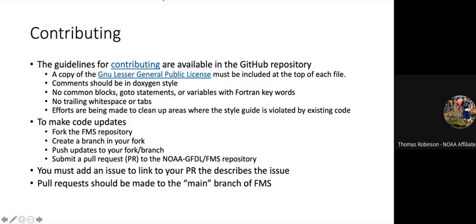There's a contribution guideline worth reading. Comments should be in Doxygen style. Looking at the existing code itself as a style example is not ideal — we came up with style guidelines, and the old code doesn't reflect those. The development workflow is: fork the repository, create a branch in your fork, push to your own fork, then create a pull request back to the main trunk of the NOAA GFDL FMS repository. All pull requests must be accompanied by an issue.